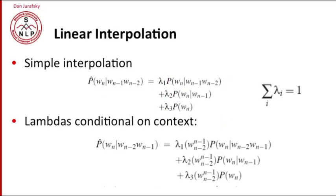We can do something slightly more complicated. We can condition our lambdas on the context. So we can say, still mix our trigram, our bigram, and our unigram, but now the lambdas are dependent on what the previous two words were. So we can train even richer and more complex context conditioning for deciding how to mix our trigrams and our bigrams and our unigrams.